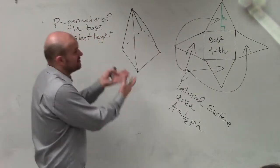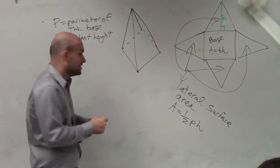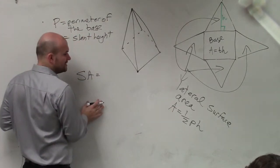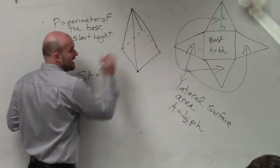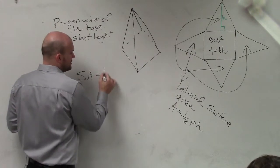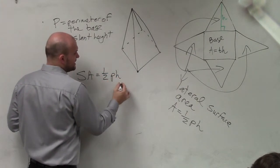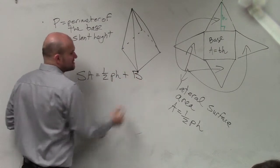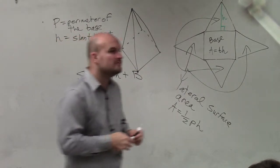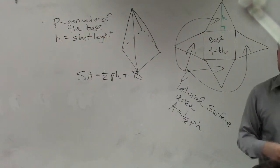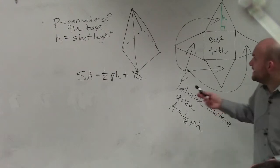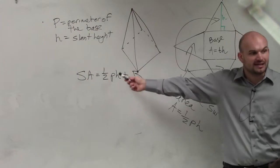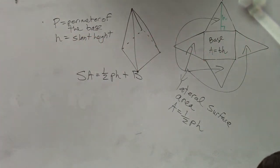So now, if I want to find the surface area of this whole figure, all I need to do is find the area of my lateral surface area and add it to my base. So it's going to be one-half p times h plus the area of the base, which is capital B, which you guys should be familiar with now talking about volume. So we find the area of the base, and then we just find the perimeter and multiply it by one-half times the height of the base or of those sides.